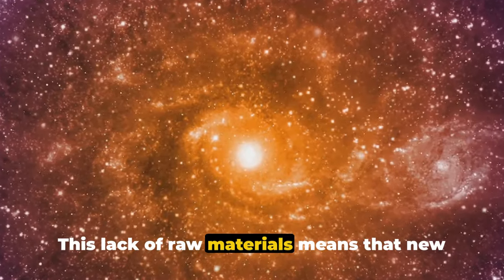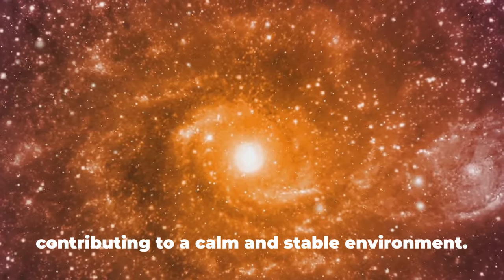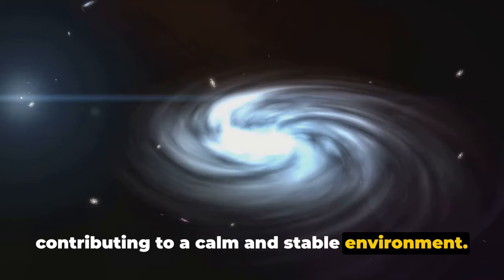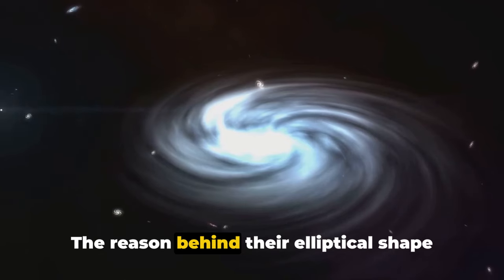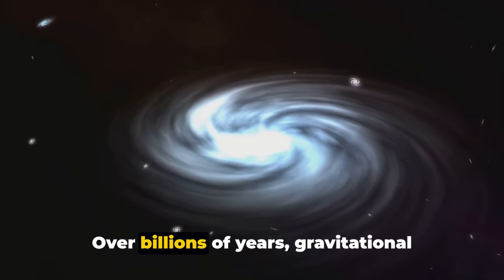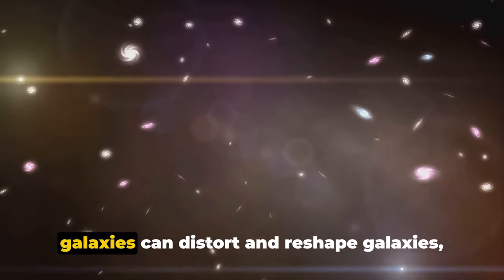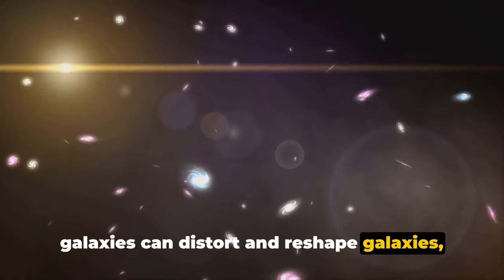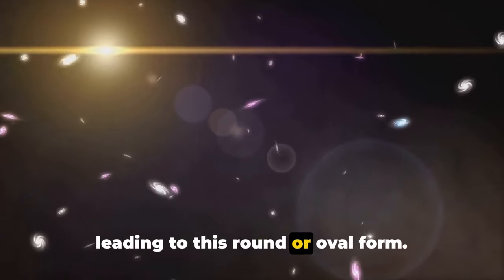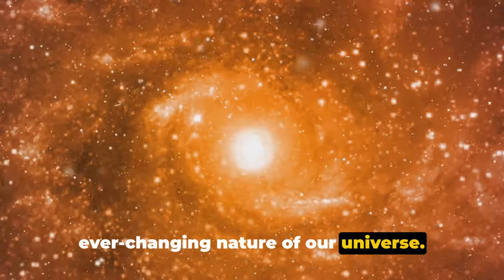This lack of raw materials means that new stars are rarely born in these galaxies, contributing to a calm and stable environment. The reason behind their elliptical shape is a story of cosmic evolution. Over billions of years, gravitational forces and interactions with other galaxies can distort and reshape galaxies, leading to this round or oval form. It's a testament to the dynamic and ever-changing nature of our universe.